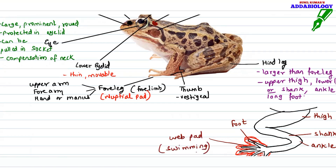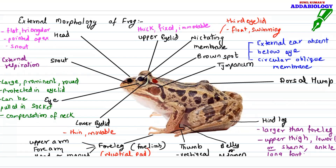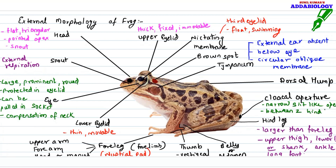On the dorsal side of the frog's body there is a small protruding projection called the hump. The ventral side shows a belly or abdomen. Between the two hind legs there is a small opening called the cloacal aperture — a narrow slit-like opening located between the two hind legs.